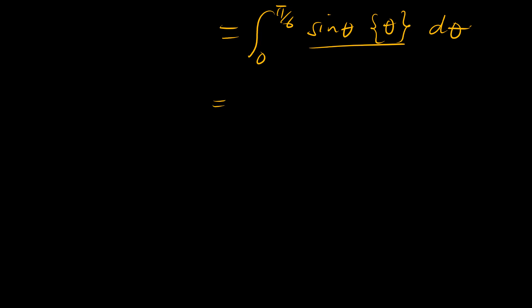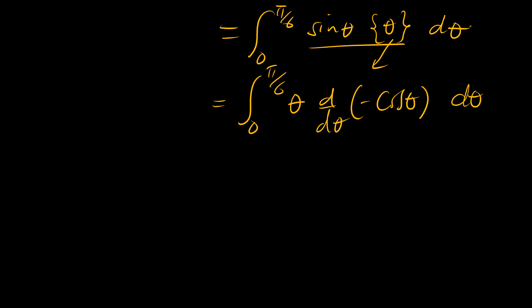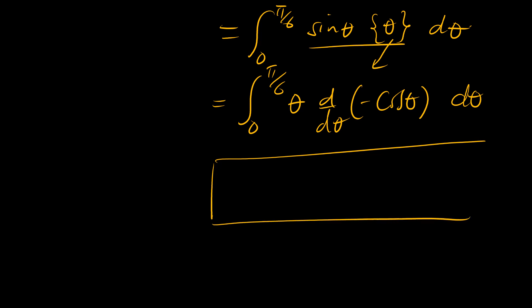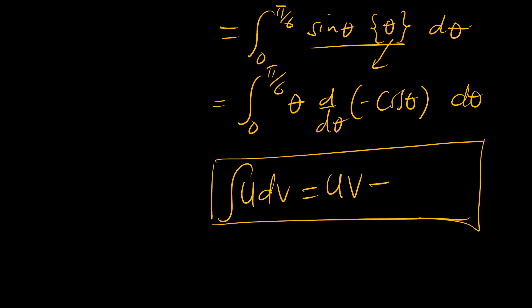We can use integration by parts. We have theta coming from the substitution, and sine theta is the same as the derivative of negative cosine theta. With integration by parts, if you have a product of a function u and derivative of v, integrating gives u times v minus the integral of v times du. Here, u would be theta and v would be negative cosine theta.